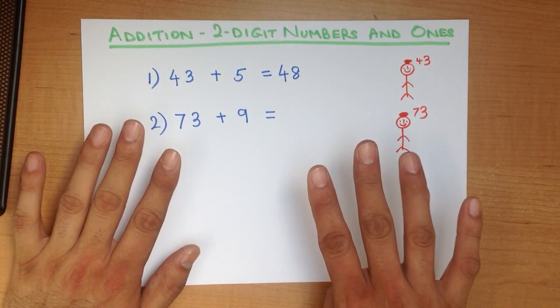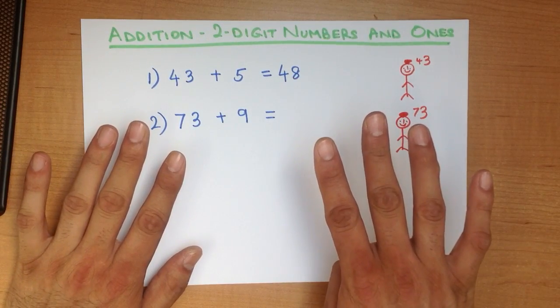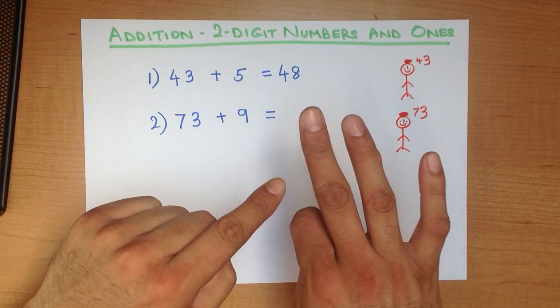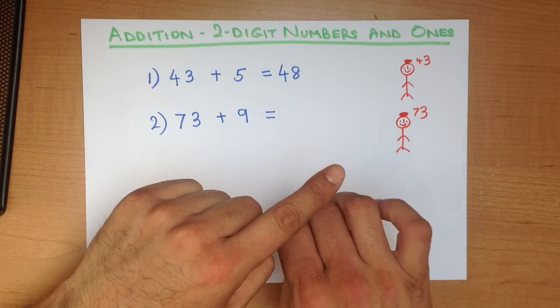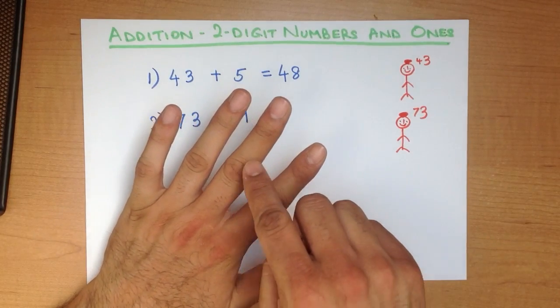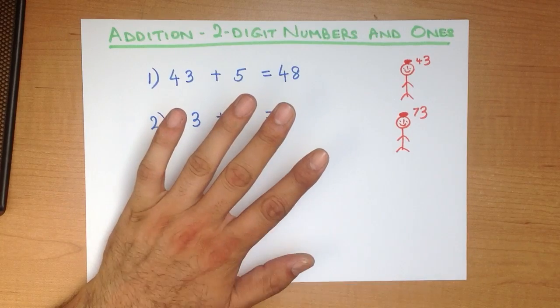So we've got 73 plus we are counting forwards. So let's do that. 73, 74, 75, 76, 77, 78, 79, 80, 81, 82.